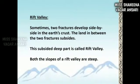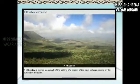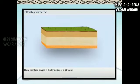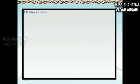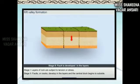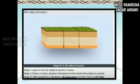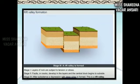Our next topic is rift valley. Sometimes two fractures develop side by side in the earth's crust. The land in between the two fractures subsides; this subsided deep part is called a rift valley. Both slopes of a rift valley are steep. There are three stages of formation: Stage 1 — layers of rocks are subjected to tension or stress; Stage 2 — faults or cracks develop and the central block begins to subside; Stage 3 — after subsidence, a depression with steep sides is formed. This is a rift valley.